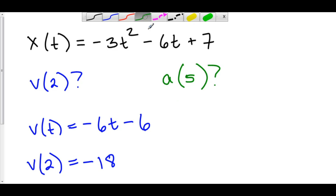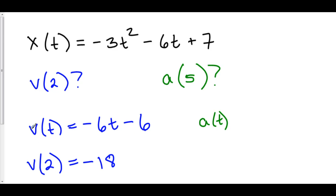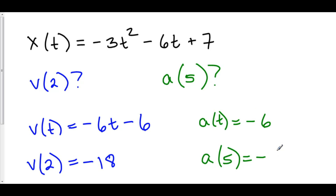Acceleration at time t equals 5: the acceleration function is the derivative of the velocity function. The derivative of negative 6t is negative 6, and the derivative of negative 6 is 0. So we have constant acceleration, negative 6. The acceleration at time t equals 5, since acceleration is constant, is just negative 6. So from our position function, we can take the derivative and find the velocity at any time t. We can take the derivative of velocity and find the acceleration at any time t. Furthermore, we can take the derivative of acceleration and find the jerk at any time t.